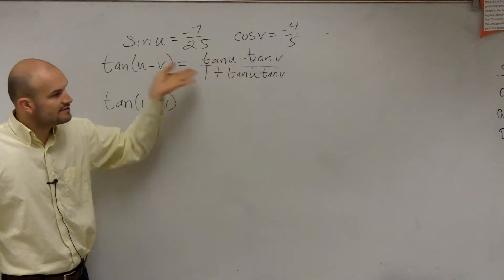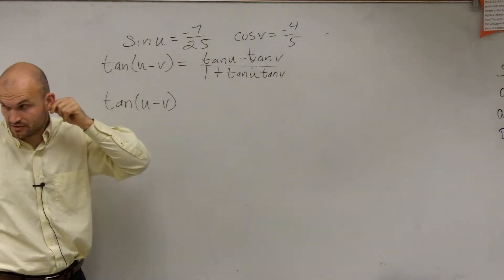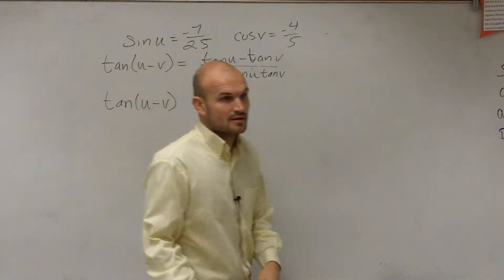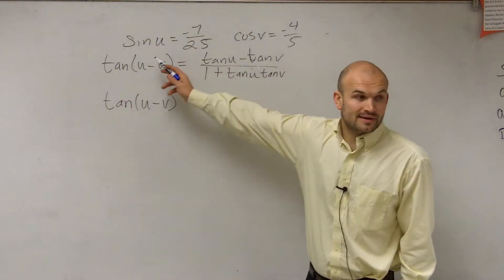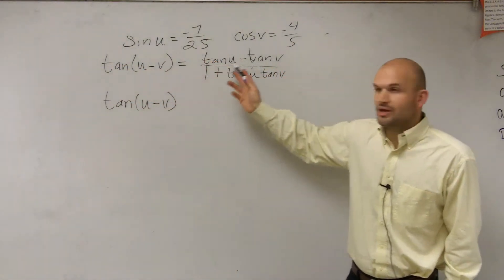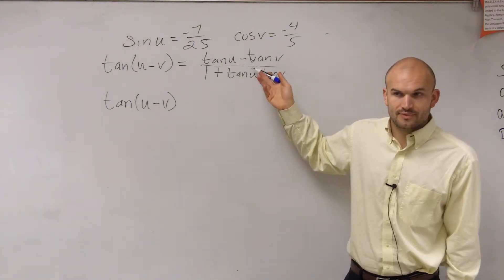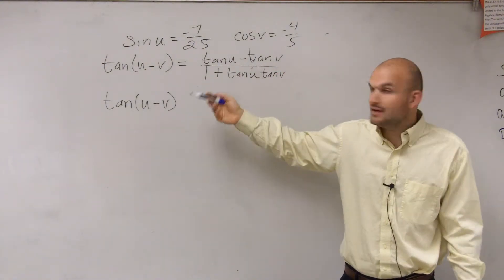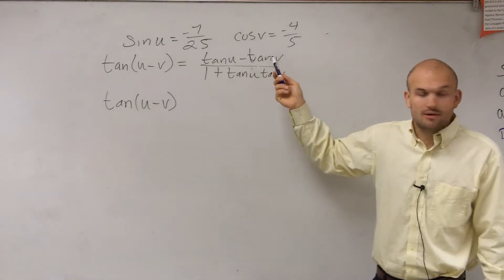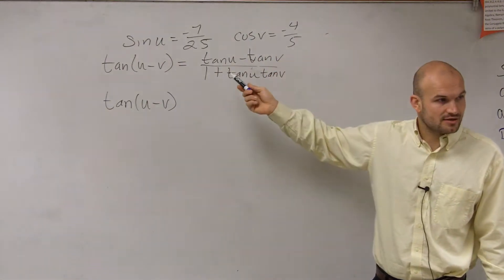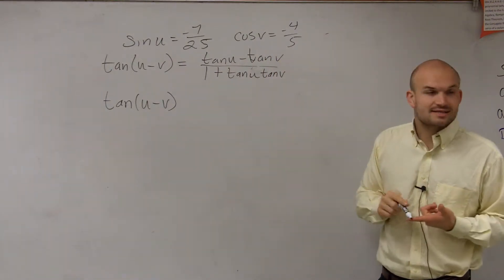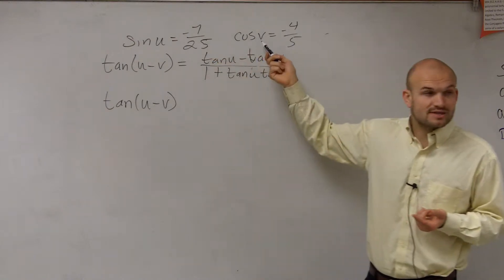Tangent of u minus tangent of v divided by 1 plus tangent of u times tangent of v. Now, the problem is we know what sine of u is, but we can't plug in sine of u into this formula. We can only plug in the tangent of u. And we know what cosine of v is, but we can't plug in cosine of v either. So we need to figure out what is the tangent for u and what is the tangent of v.